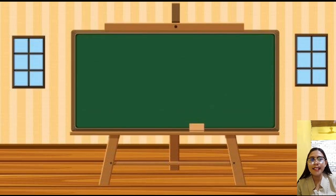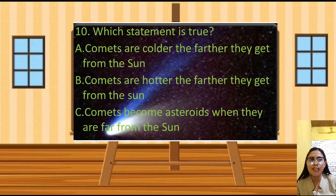Let's have the last number. Number 10. Which statement is true? Yes, you're right. Letter A. Comets are colder the farther they get from the sun.